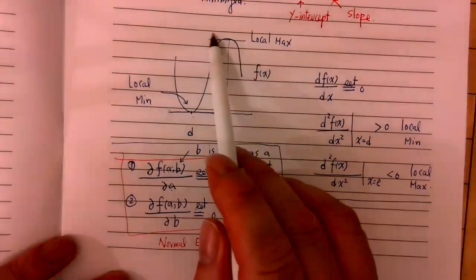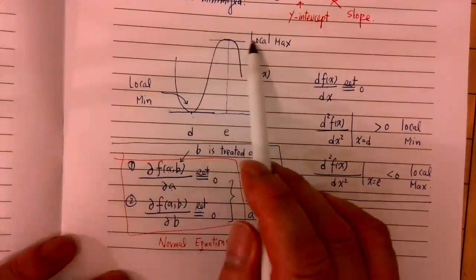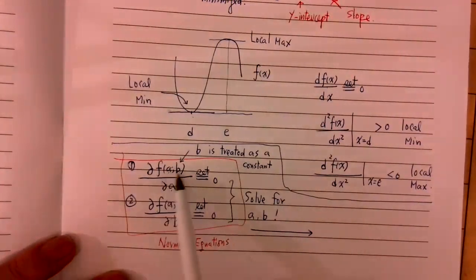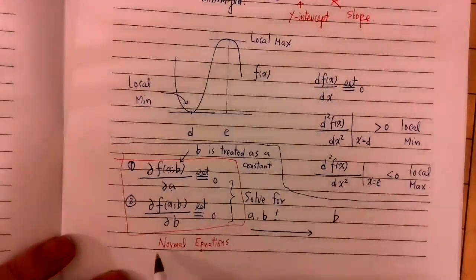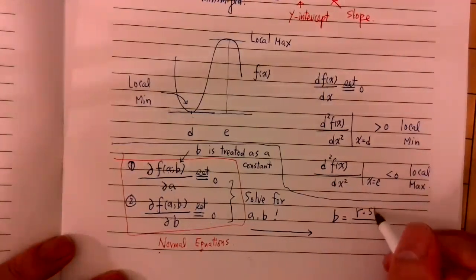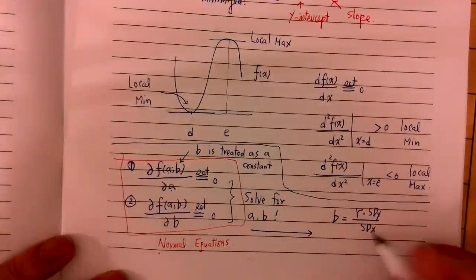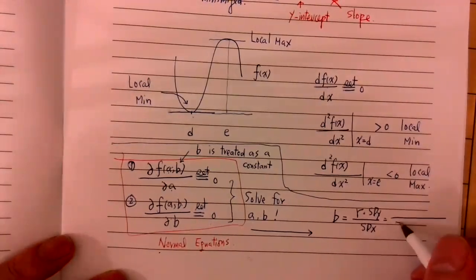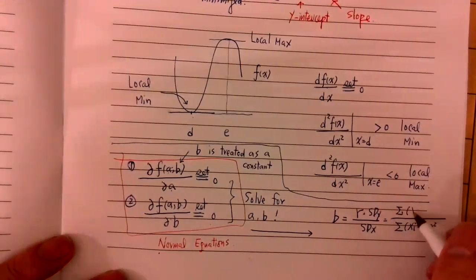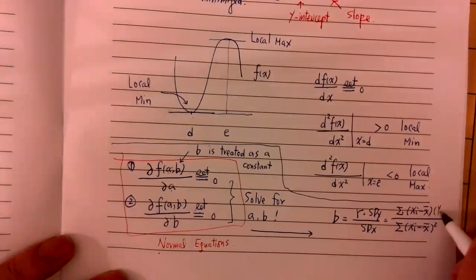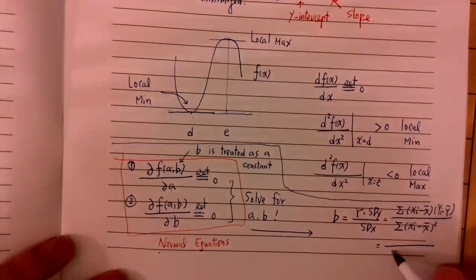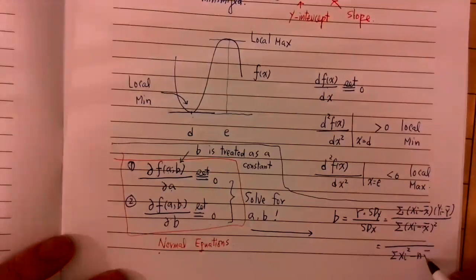Why do we set it equal to zero? Because at a local maximum or local minimum, the slope of the tangent line always equals zero. So you set it equal to zero and solve for A and B. If we solve the normal equation, we find B equals R times standard deviation Y over standard deviation X. Alternatively, you can write it as the summation of x_i squared minus x̄.